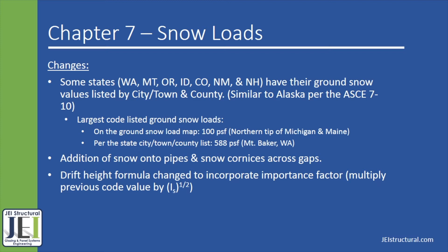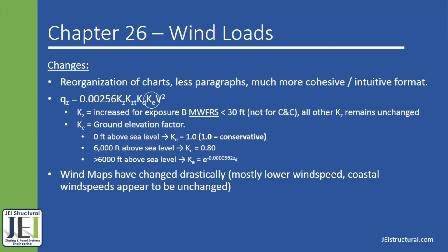For the next two chapters, we will go over wind loads. The third chapter for this presentation covers Chapter 26, Wind Loads. Overall, the structure of this chapter has changed so that it is much easier to read and is generally more cohesive. Also, the velocity pressure equation now includes one new variable, k sub e, which is the ground elevation factor. This new factor allows you to reduce the pressure based on your altitude above sea level, or it can be conservatively assumed to be 1.0. Something also worth noting is that the height coefficient, k sub z, has increased for main wind force resisting systems, exposure B and below 30 feet.